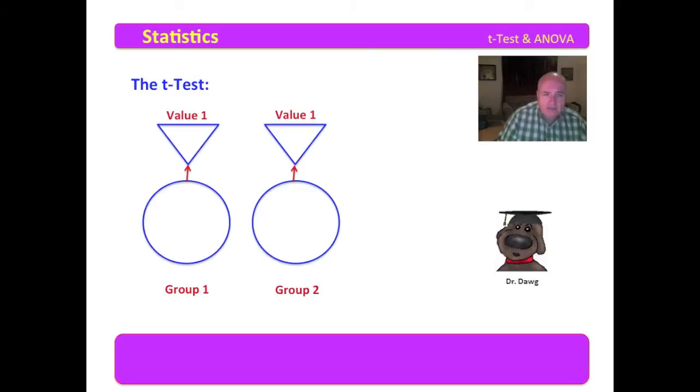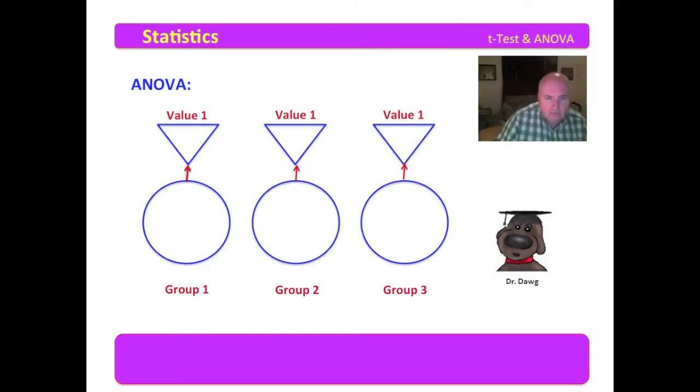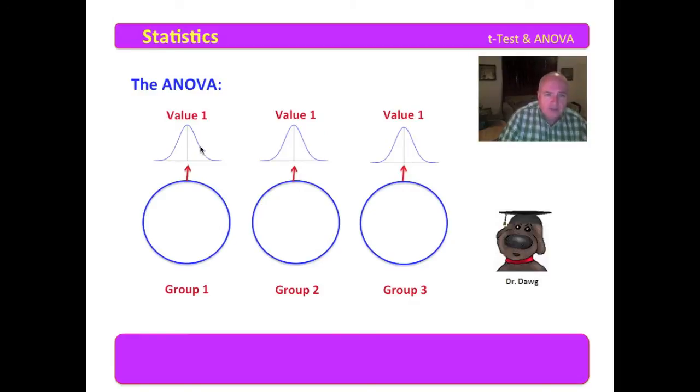Now, the t-test, you will recall, had group 1 and group 2. And you were looking at the same dependent variable, the values for each particular group. Now ANOVA just simply has two or more groups. So in ANOVA, we might have three groups in which we looked at this one particular dependent variable. Now, I use this to remind you that these distributions of the dependent variables for each of the groups need to be normally distributed or approximately normally distributed.